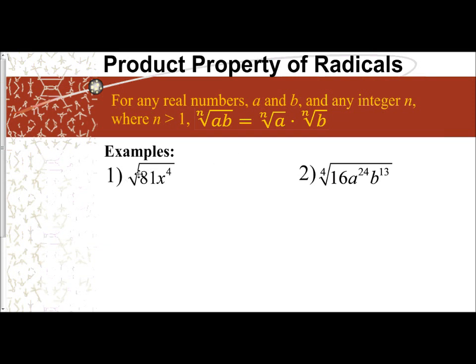So if we have the square root of 81x to the fourth, what you do is you split it apart. You do the square root of 81 times the square root of x to the fourth. The square root of 81 is 9, and the square root of x to the fourth is x squared, because remember, you're taking the square root, you divide the 4 by 2, and there's nothing remaining inside. So you have 9x squared.